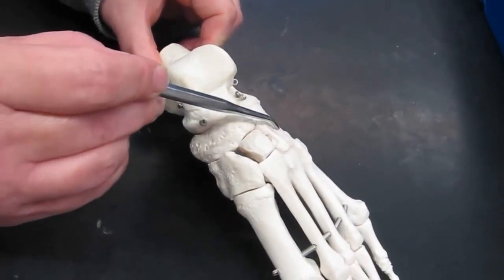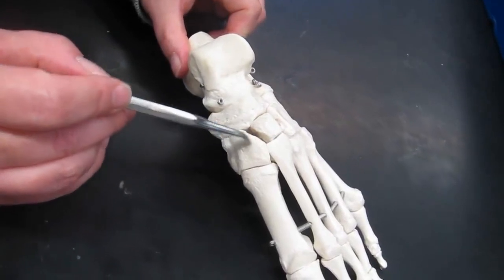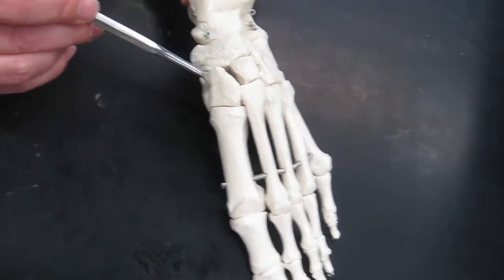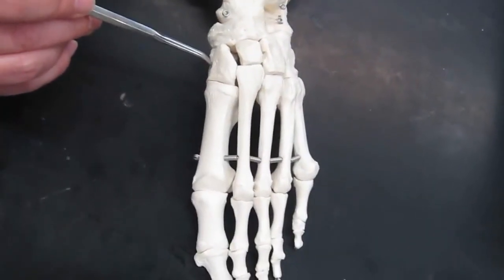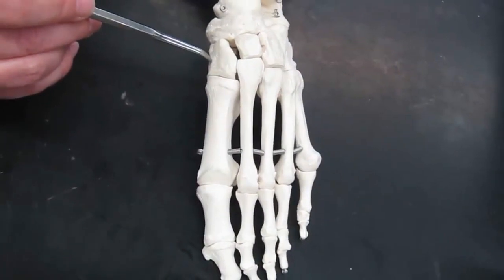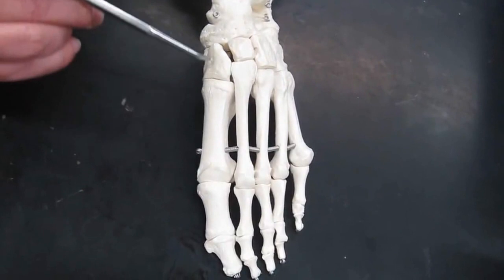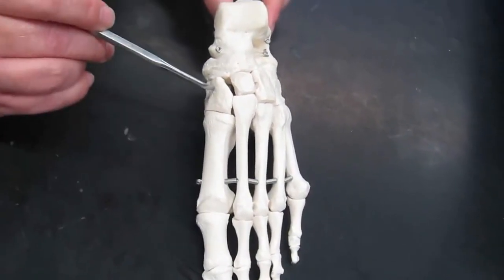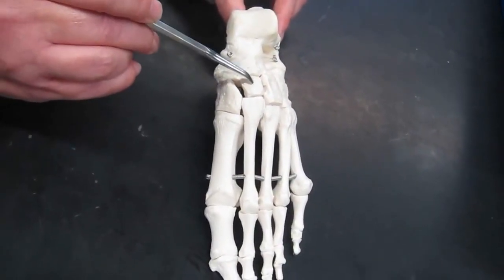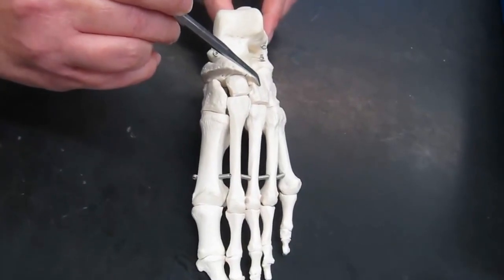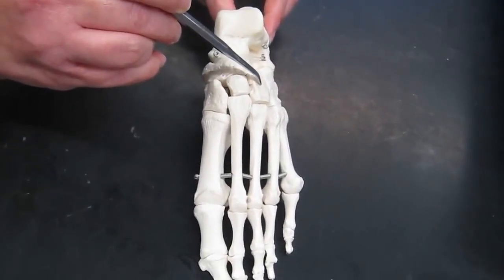Then we have three bones here, which are the cuneiform bones. They are named by their position. Medial is going to be the one that is right near where the great toe is. Intermediate is going to be here in the middle. Then the lateral cuneiform is going to be here.